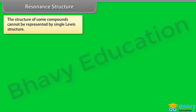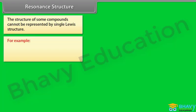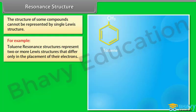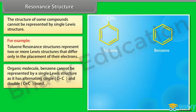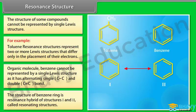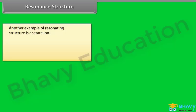The structure of some compounds cannot be represented by a single Lewis structure — for example, toluene. Resonance structures represent two or more Lewis structures that differ only in the placement of their electrons. Benzene cannot be represented by a single Lewis structure as it has alternating single and double bonds; its structure is a resonance hybrid of two resonating structures. Another example of resonating structures is the acetate ion.